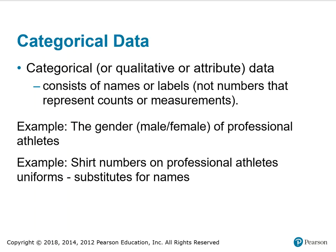Categorical, qualitative, or attribute data consists of names and labels, not numbers that represent counts or measurements. For example, the gender of professional athletes. Another example: shirt numbers on professional athletes' uniforms, which serve as substitutes for names.